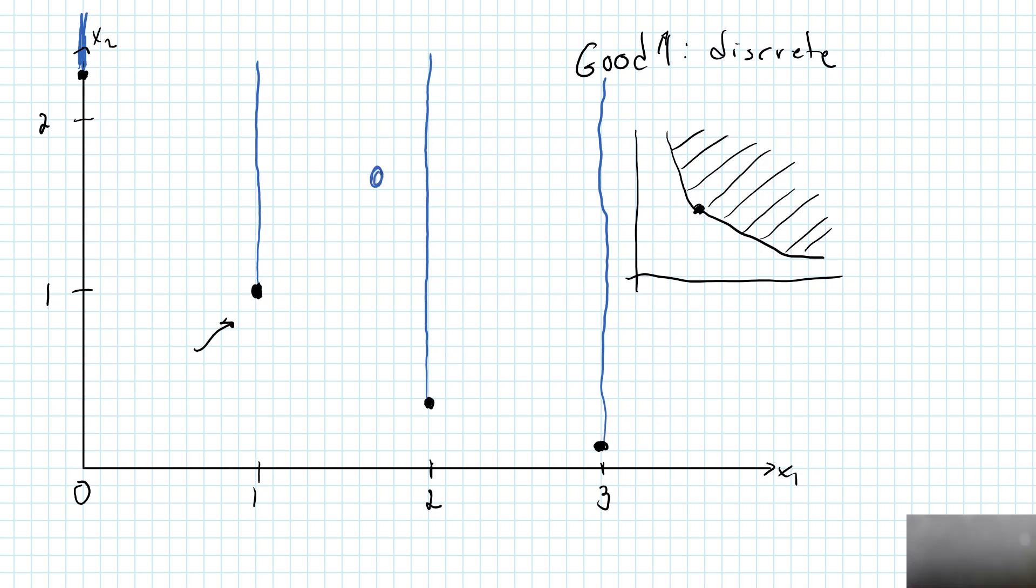I cannot add a point such as this one to the weakly preferred set due to the discreteness of good 1. So let's draw what we just did a bit nicer. A good is discrete if we cannot buy any arbitrary number of units. We assume that we could only consume an integer number of units of good 1.